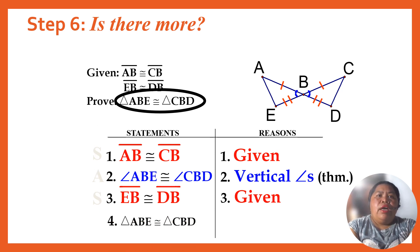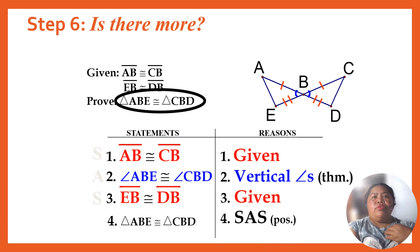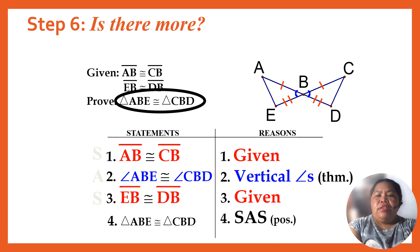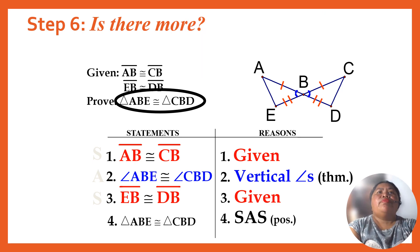Triangle ABD is congruent to triangle CBD — that is true by the SAS postulate.